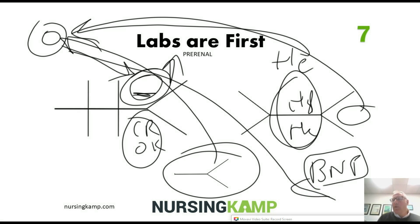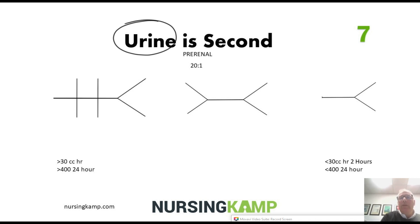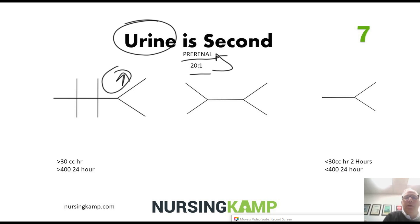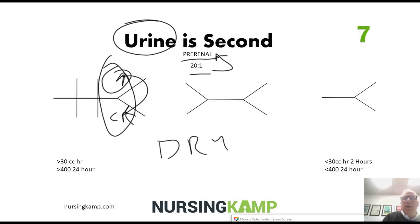Looking more closely at the labs: in urine, this is called pre-renal 20 to 1. That term refers to a pre-renal condition where the BUN is elevated and the creatinine is normal. The rule is: look at the BUN first — if it's high, go down to the creatinine. If the creatinine is normal and the BUN is high, the person is dry, and that is a pre-renal situation like hypovolemia.